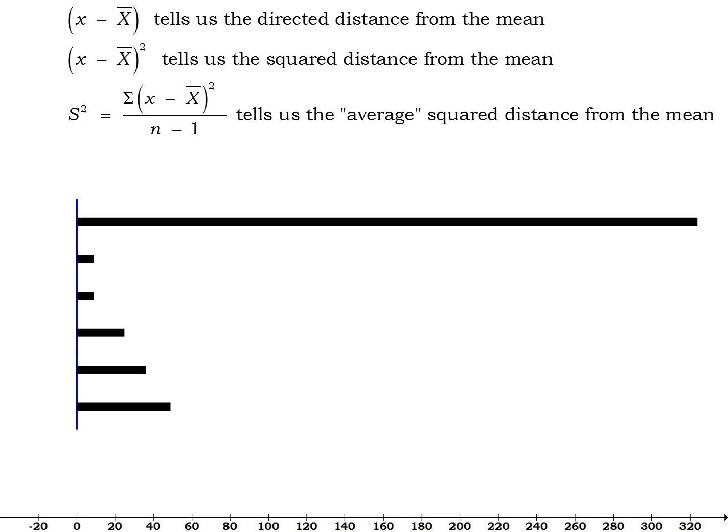The final thing I want to look at is our sample standard deviation. Now remember, the symbol for that is s. S is literally the square root of our sample variance. So interpretation wise, if the sample variance is the average squared distance from the mean, if we square root that, we're going to lose the squared. And that's what we have. Our sample standard deviation essentially tells us the average distance from the mean.